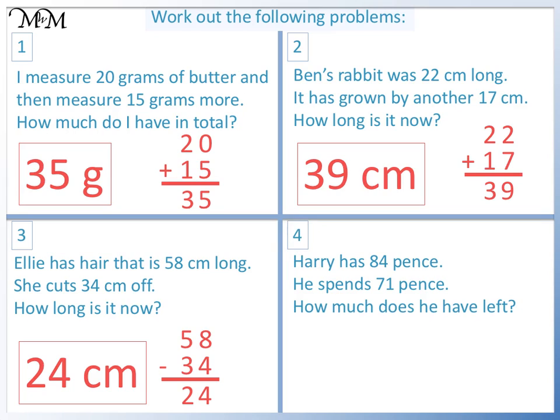Question 4. Harry starts with 84 p and we subtract 71 p. 4 take away 1 equals 3 and 8 take away 7 equals 1. He has 13 p left.